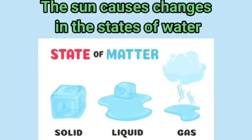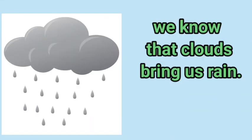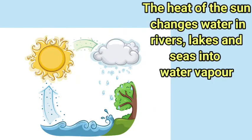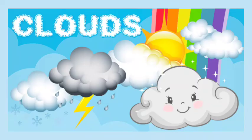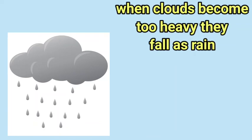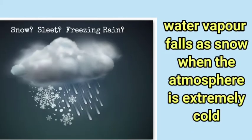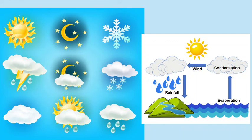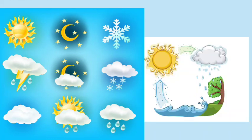The sun causes changes in the states of water. We all know that clouds bring us rain. The heat of the sun changes water in rivers, lakes and seas into water vapour. This water vapour rises and forms clouds. When clouds become too heavy, they fall as rain. Water vapour falls as snow when the atmosphere is extremely cold. Thus, the sun causes water to change from one state to another.